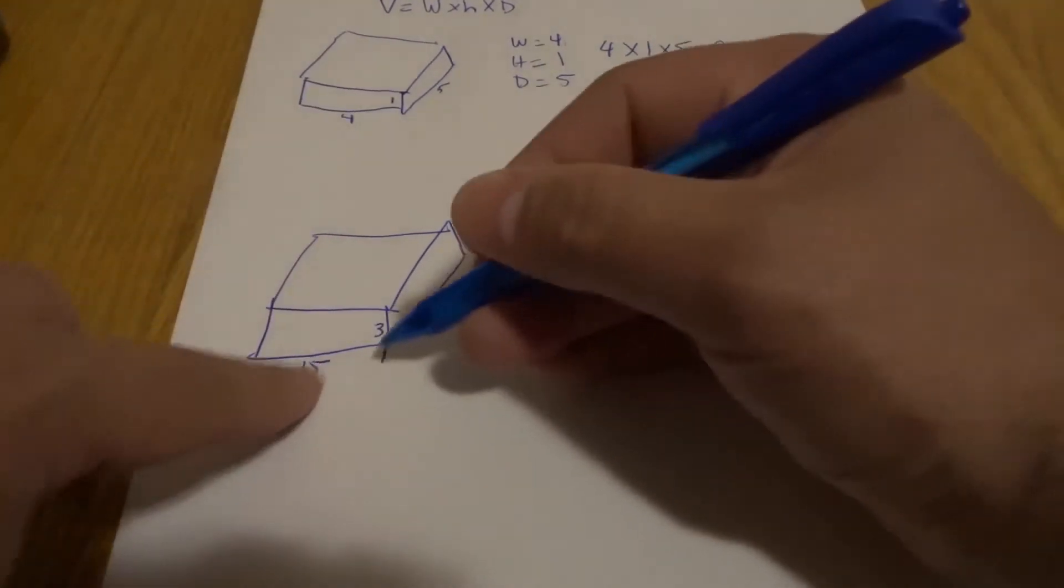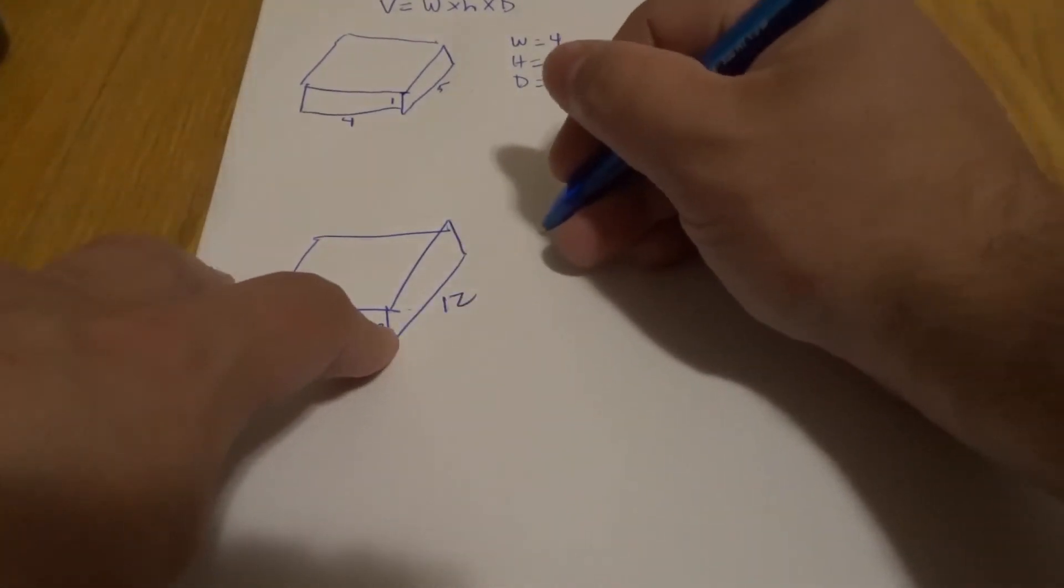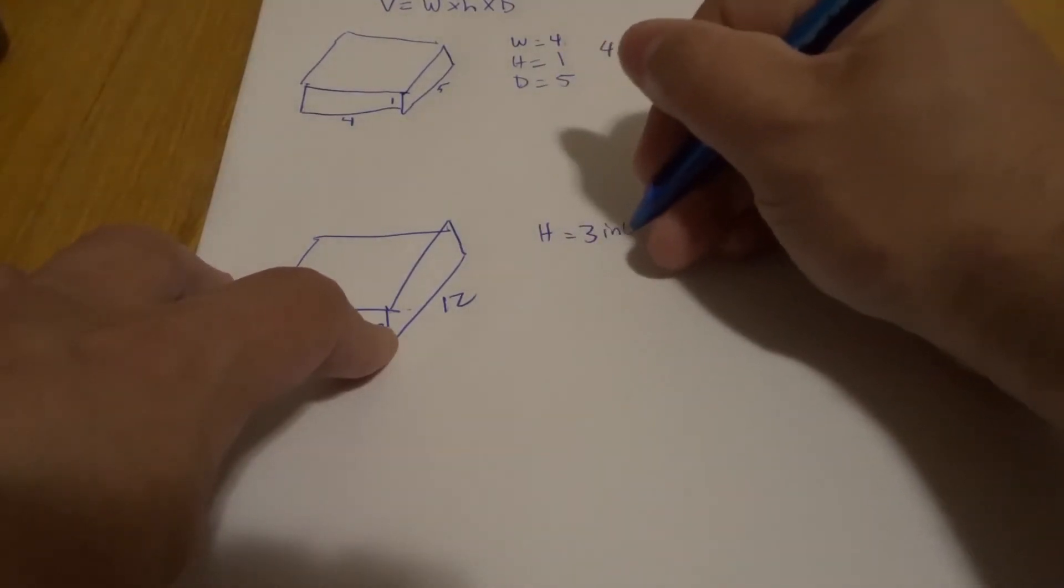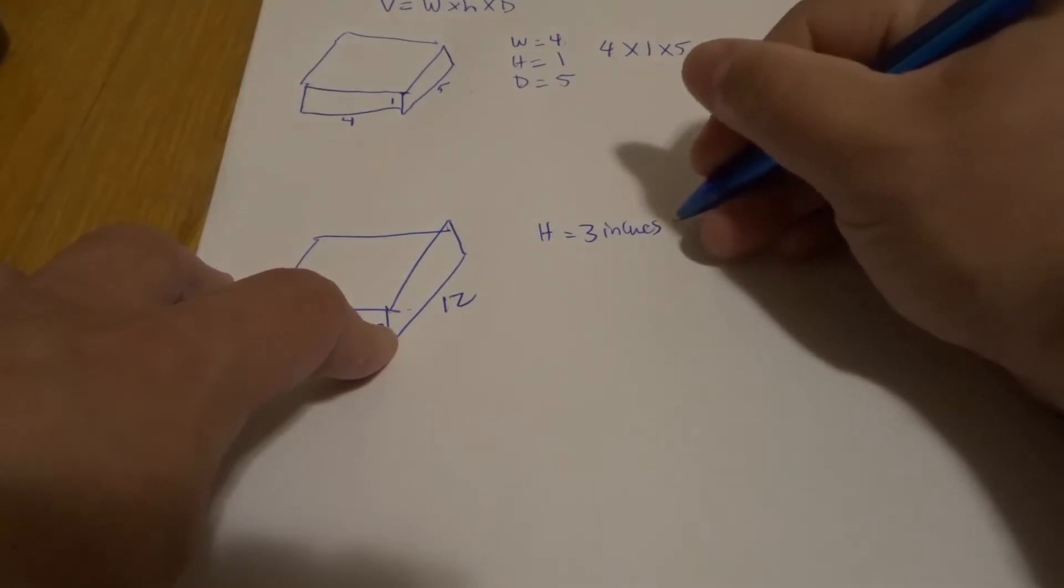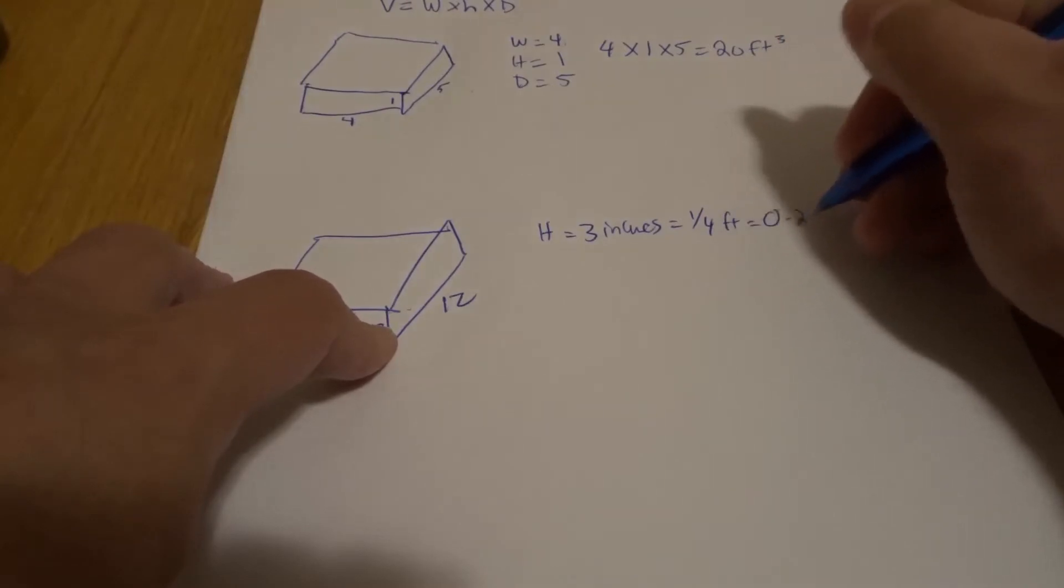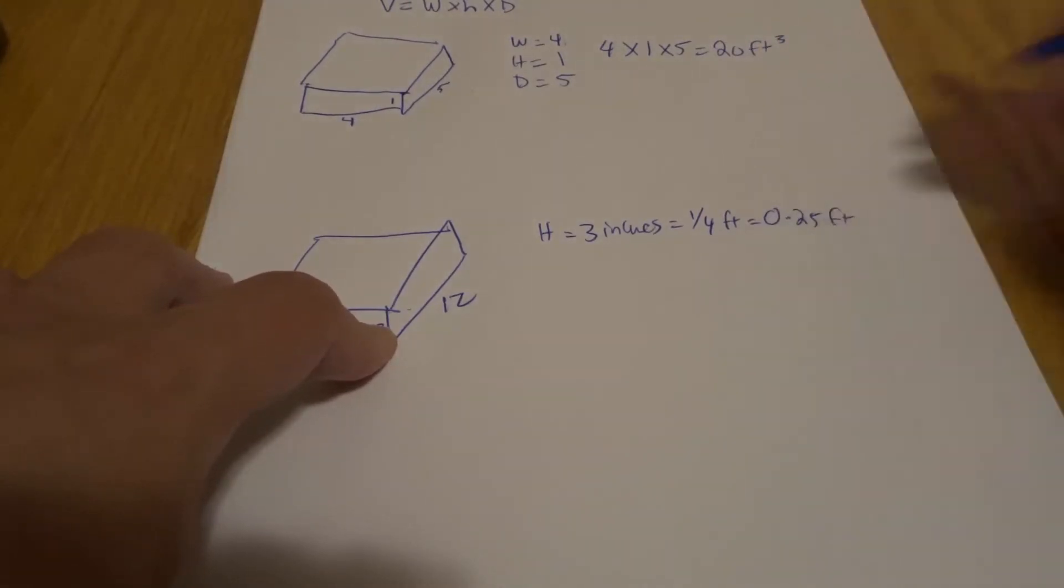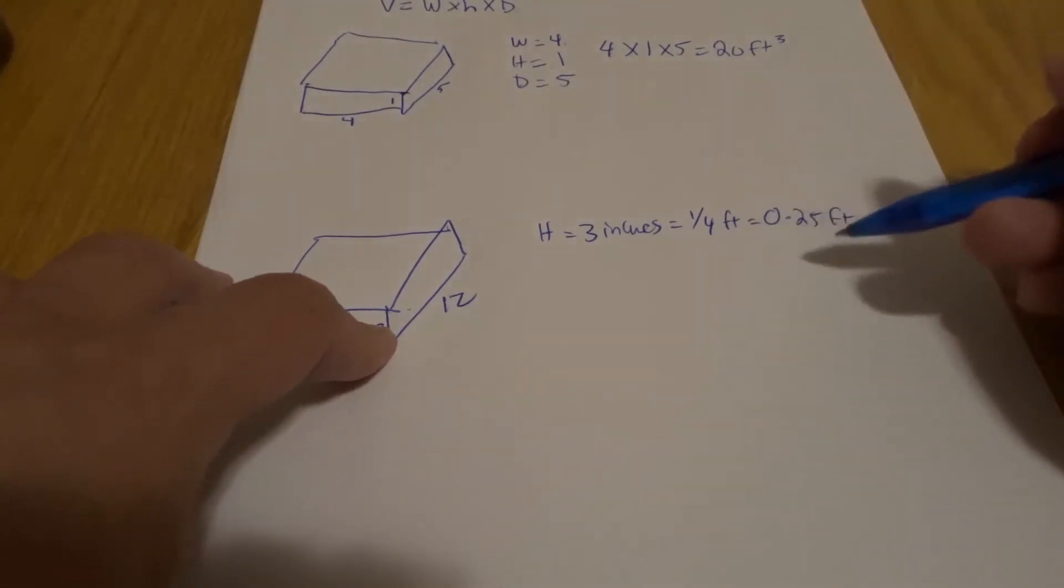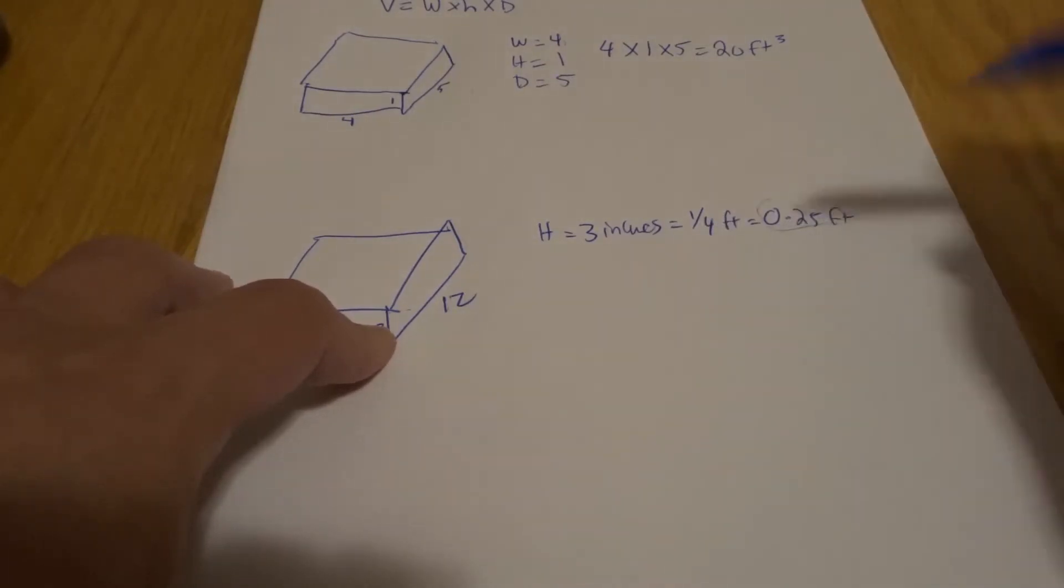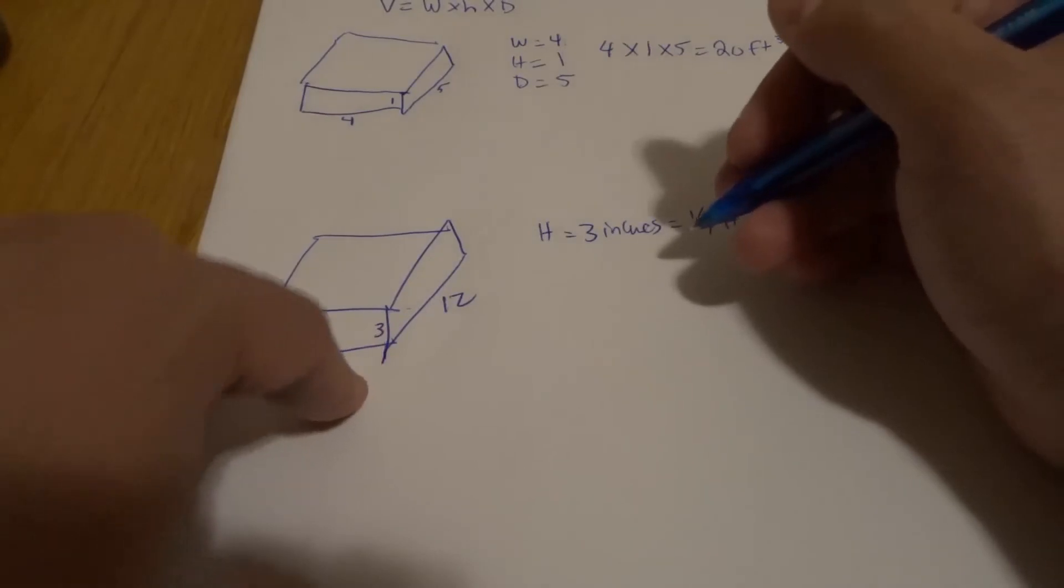First and foremost, we have our height. We'll start with the height because it's nice and easy. Our height is going to be three inches. Three inches is actually one quarter of a foot, or 0.25 feet. So that's our first dimension: 0.25. We're looking for not necessarily a fraction, but a decimal number - 0.25 feet.